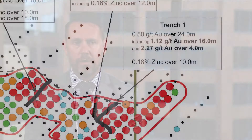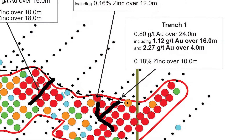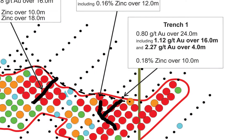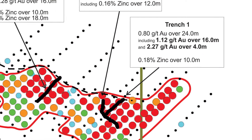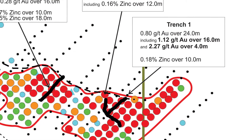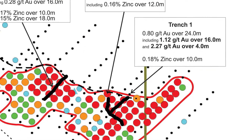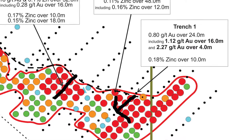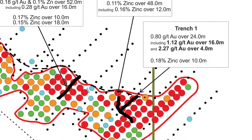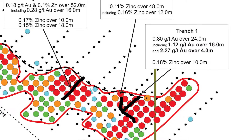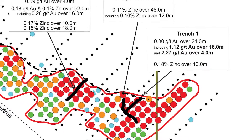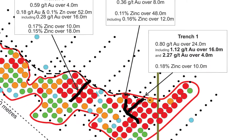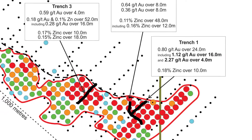Highlight results from the trench program include trench one, which returned 16 meters of 1.12 grams per tonne gold. Within that, there was an elevated gold intercept of four meters of 2.27 grams per tonne gold, also including 0.18 percent zinc.